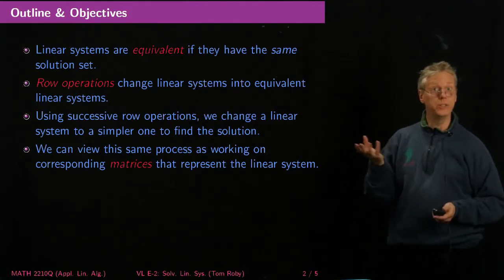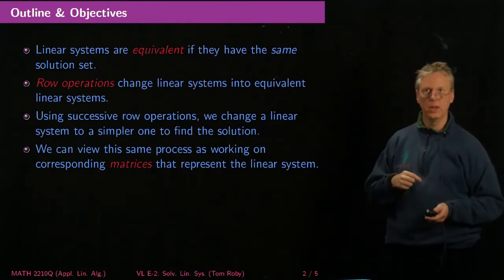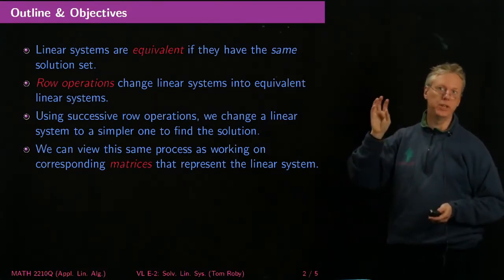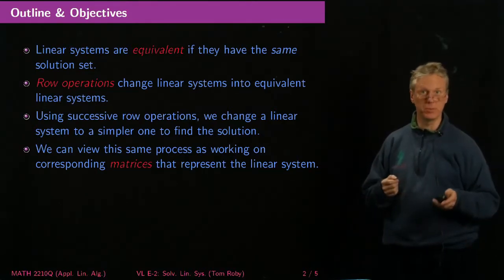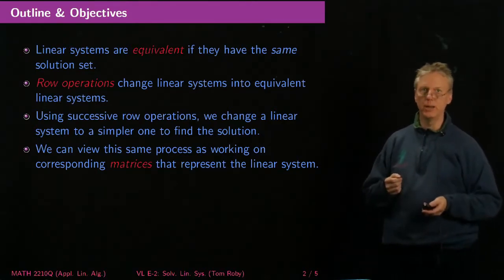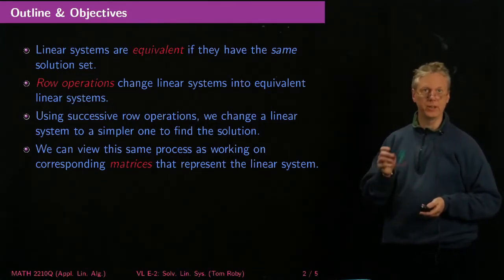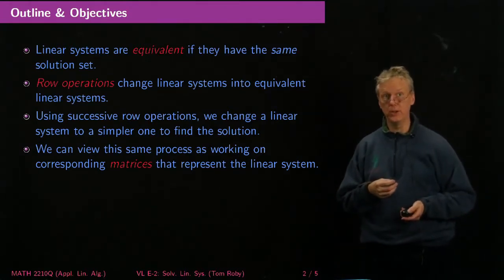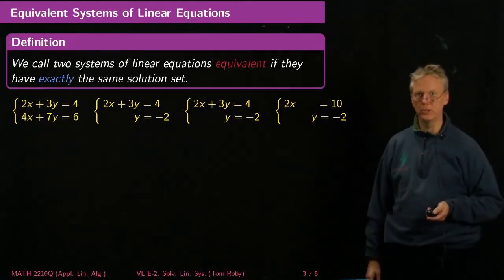We'll define something called row operations, which will be very natural, and they change linear systems into equivalent linear systems. By using successive row operations, we'll be able to change a linear system to a simpler one that will allow us to find the solution. We can view this same process as working on corresponding matrices that represent the linear systems. The matrices basically forget about the variables involved and from a bookkeeping standpoint, they're easier to use, but that level of abstraction actually becomes much more powerful and is used throughout the course.